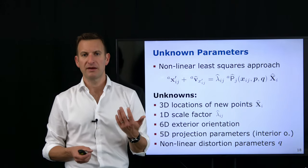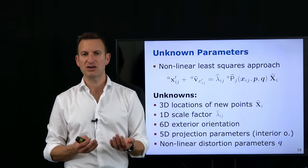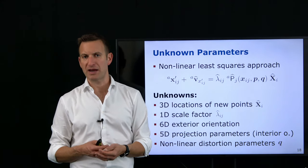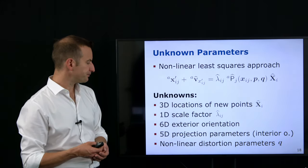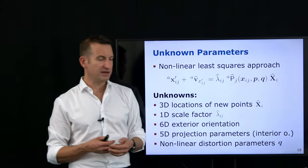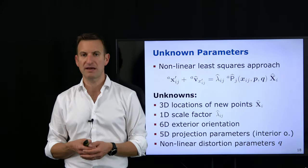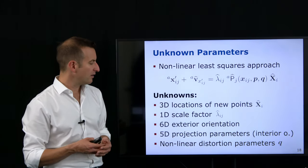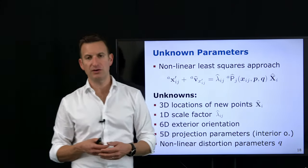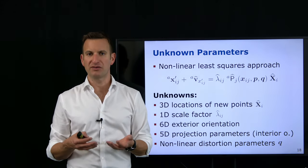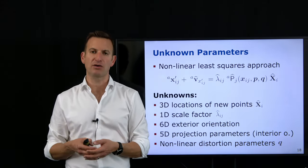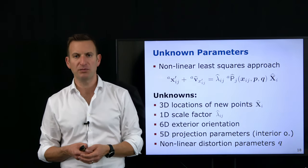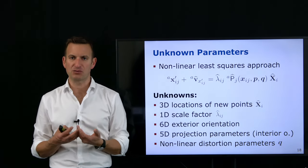We also have five parameters for the standard intrinsics in the projection matrix — the linear parameters of the affine camera model — and a certain number q of unknown parameters describing nonlinear errors, for example barrel distortion, which may require one or two parameters. These calibration parameters are typically independent from the images being taken — we assume the intrinsics don't change with position. However, if a camera is exposed to strong temperature changes, such as an airplane at altitude, certain parameters of the projection matrix may change.